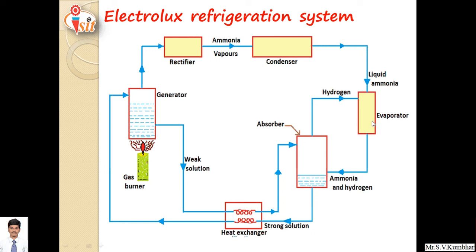In the evaporator, cooling effect is produced. The weak solution formed in the generator is a hot weak solution, which is sprinkled in the absorber. At the same time, low pressure ammonia from the evaporator is passed through this hot weak solution, and strong solution is produced. This strong solution is sent back to the generator. The heat exchanger is used for heat recovery — the hot weak solution exchanges heat with the strong solution, so it takes less time to heat in the generator.